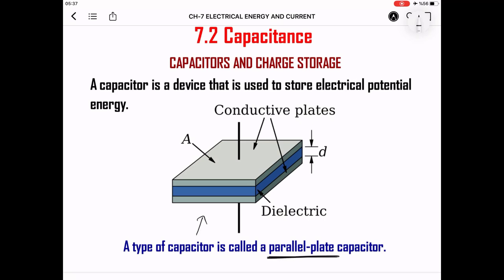As you see in this picture, we have two plates like this. These plates are made of metal. If you connect the battery, this is the capacitor which stores charge. If it stores charge, that means it is already storing energy. The side which is attached to the positive pole of the battery is storing positive charge, and the side attached to the negative side of the battery is storing negative charge. This is called a capacitor.